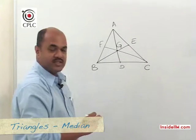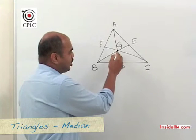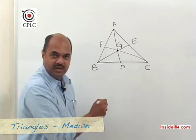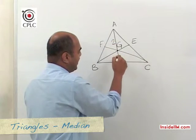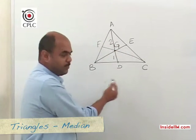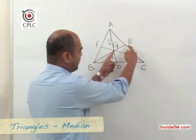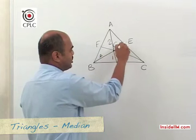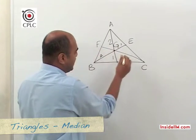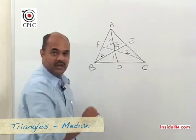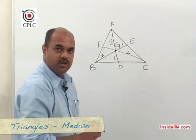With respect to the centroid, there is an extremely important property: a centroid divides each median in the ratio 2:1. This means AG divided by GD is 2:1, and similarly BG divided by GE is 2:1.